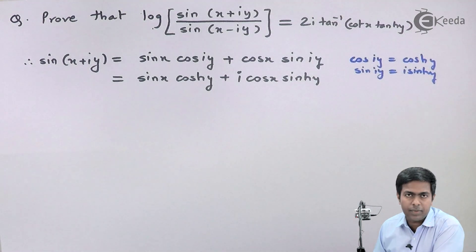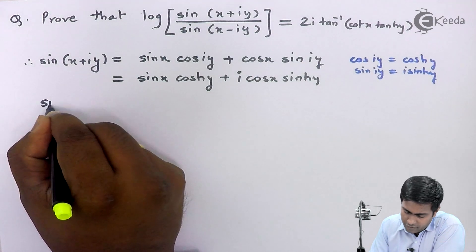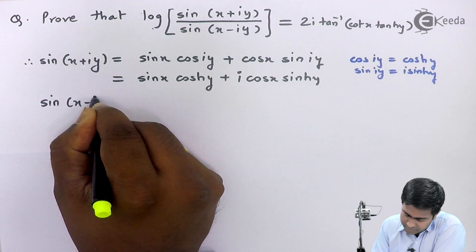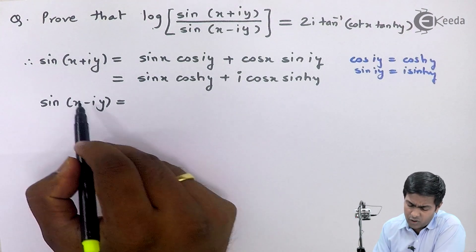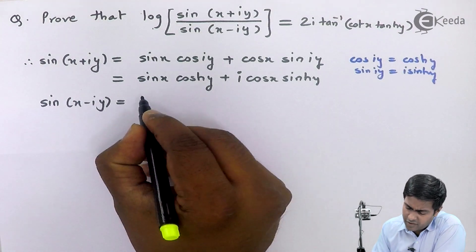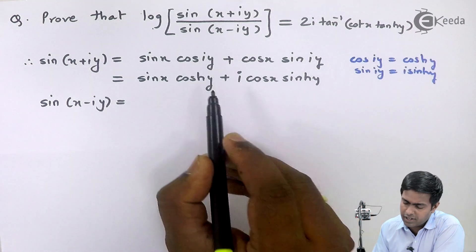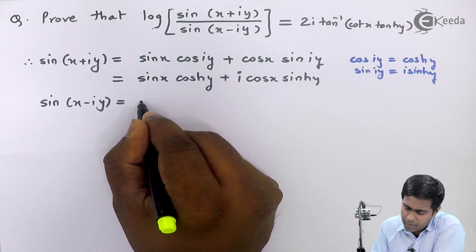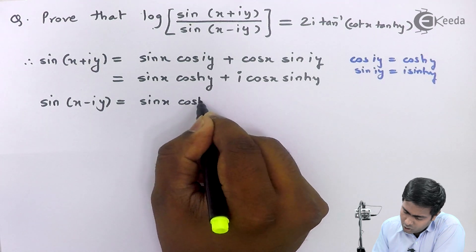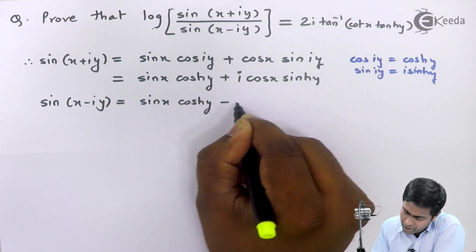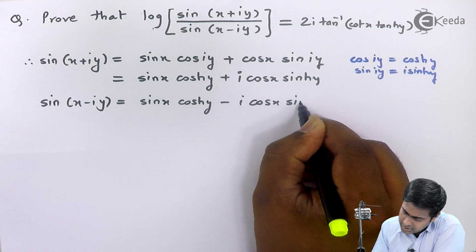Similarly, we find the value of sin(x-iy). It has the same form with a sign change: the plus becomes minus. So sin(x-iy) = sin x cosh y - i cos x sinh y.